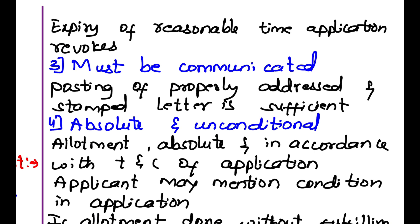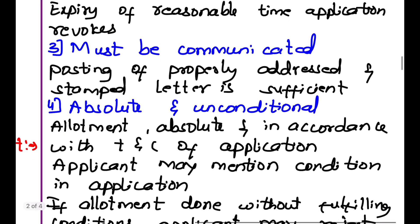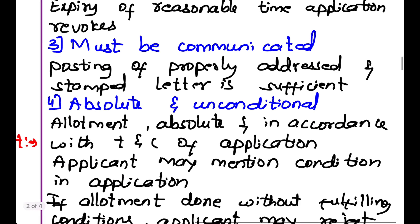If the reasonable time has expired, then the application of that applicant to buy shares will be revoked — cancelled. The allotment must be communicated. Posting of a properly addressed and stamped letter is sufficient. If the company posts the letter with a proper address and proper stamp, then it is sufficient communication that their share has been allotted.